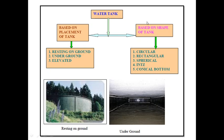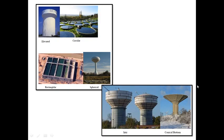Based on the shape of the tank, it can be classified as Circular Water Tank, Rectangular Water Tank, Spherical Water Tank, Intze Tank, or Conical Bottom. In these photos, we can see the water tank resting on ground, the underground water tank constructed below the ground, and the elevated water tank. These are Circular Water Tanks. This is the plan of a Rectangular Water Tank. This is the Spherical Water Tank. This is the Intze Type, and this is the Conical Bottom Water Tank.